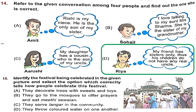Question 15: Identify the festival in the given picture and select how people celebrate it. The picture shows Eid, celebrated by Muslims. Special prayers are offered in the mosque, and they wear new clothes and eat meethi seviyan. Option A — they decorate trees with sweets and toys — that's Christmas, not Eid. Option B — they go to the mosque to offer prayers and eat meethi seviyan — yes, that's correct. Option B is the right answer.